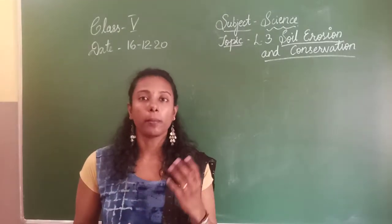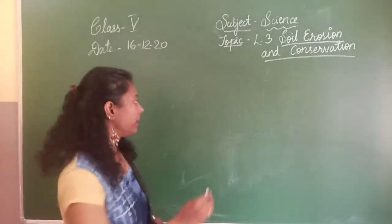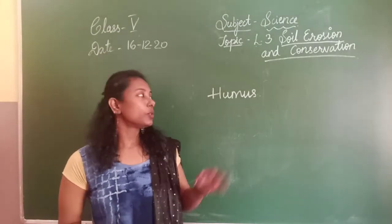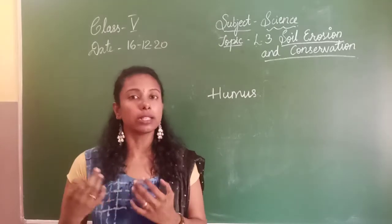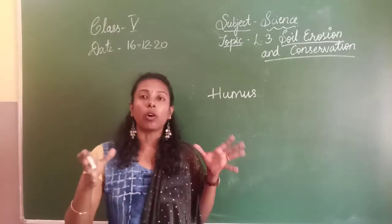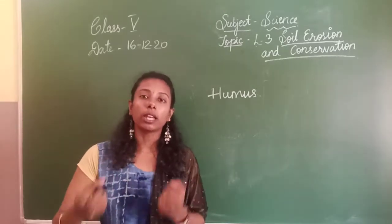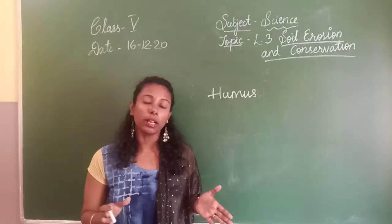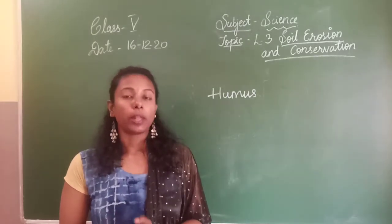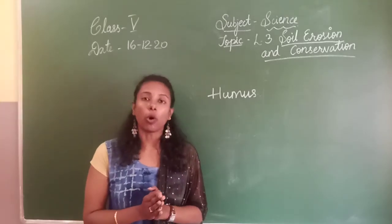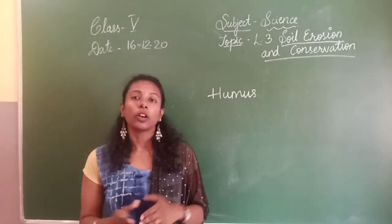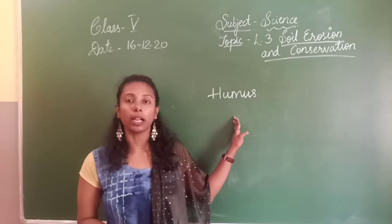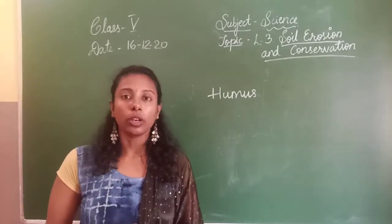The dead and decaying matter inside the soil is referred to as humus. This humus contains a lot of nutrients and minerals. Whenever the organic matter decays, it gives the soil its nutrients and minerals, and that is why such soil is called fertile soil. Plants are able to receive all kinds of nutrients and minerals and grow very nicely. So humus-rich soil is called fertile soil and is suitable for plants to grow.